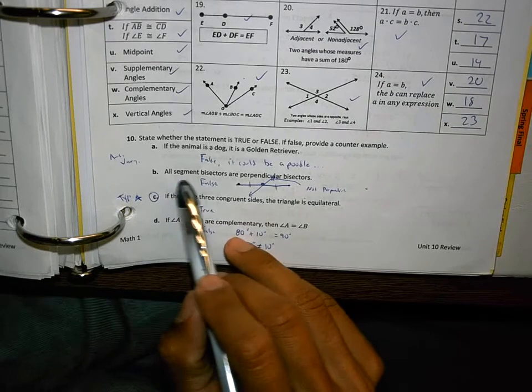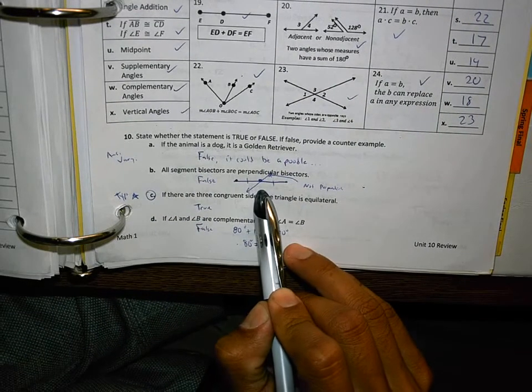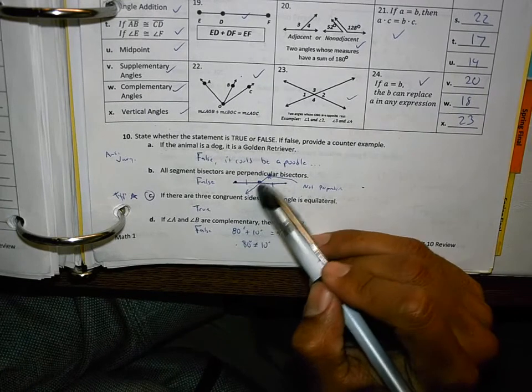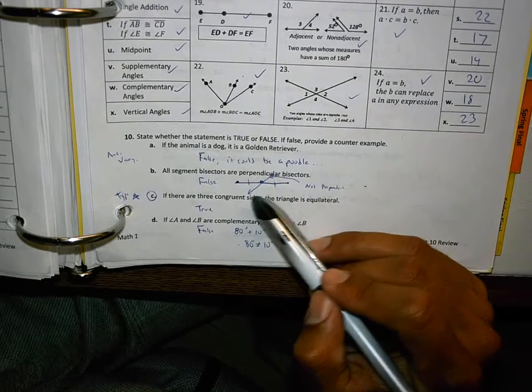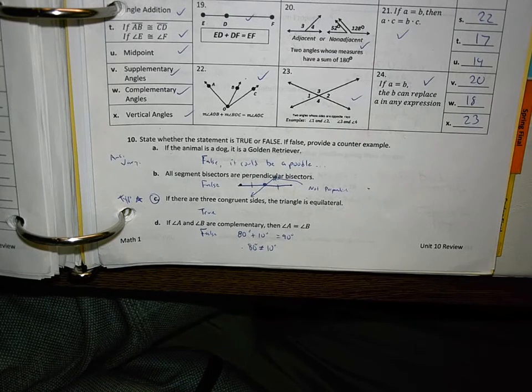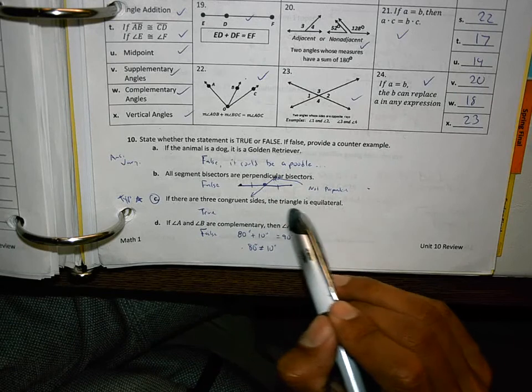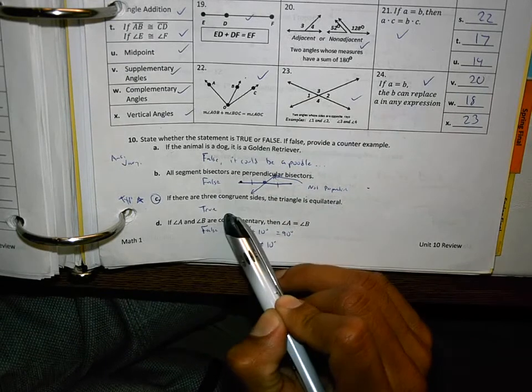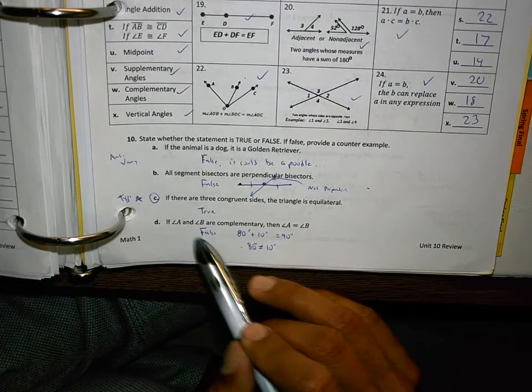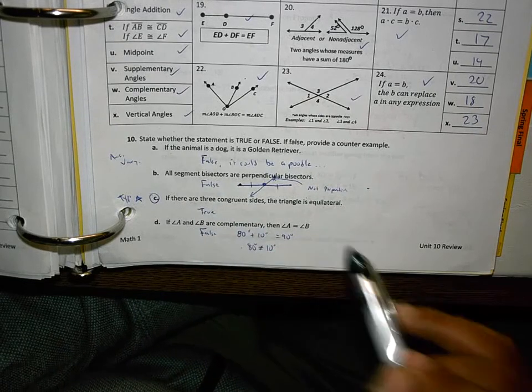All segment bisectors are perpendicular bisectors. I put it false, and I drew a picture. This is a segment bisector, and it went in at an angle. It could still cut it down the middle if possible. There's a picture of it for you. If there are three congruent sides, the triangle is equilateral. That's true. If a triangle has three congruent sides, then the triangle is equilateral is what I wanted to put there.